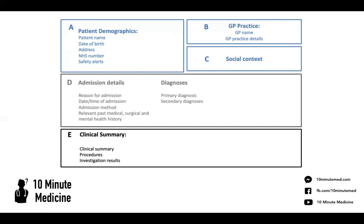Then we move on to the admission details: why have they come in, the date and time of admission, and the method of admission — so has it been elective or is it an emergency? Anything that's not elective is considered an emergency admission. And then any past medical, surgical, or mental health history — you always want to mention that, and there's usually a separate section for it.